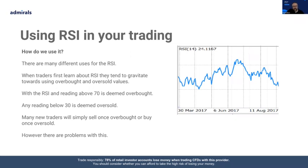When traders first learn about RSI, they tend to gravitate towards using overbought and oversold values. Why? Because it's very simple and easy to understand, and it's quite visual — you can quickly look at the RSI and see if it's above 70 where it'd be overbought, or below 30 where it's oversold. Many new traders will simply sell once overbought, or buy the market once oversold. However, there are problems with this — it's not as simple and easy as that.